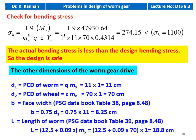We calculate the other dimensions. D1, PCD of the worm, already calculated: 11 cm. D2, PCD of the wheel: Z × MX = 70 × 1 = 70 cm. Face width from table 38: B = 0.75 × D1 = 0.75 × 11 = 8.25 cm. Length of the worm from table 39: L = 12.5 + 0.09 × Z × MX = 12.5 + 0.09 × 70 × 1 = 18.8 cm.